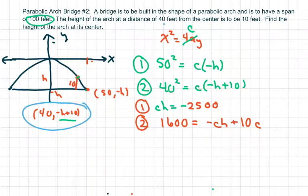And if we substitute, we have two CHs. So I'm going to substitute. I already have CH equals negative 2,500, so I'm going to just plop it in there and then solve for C.